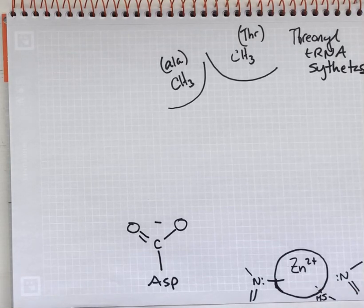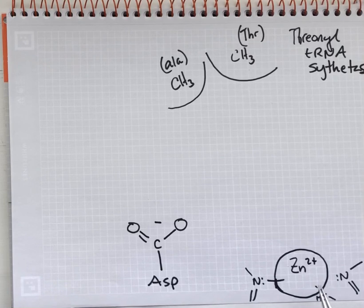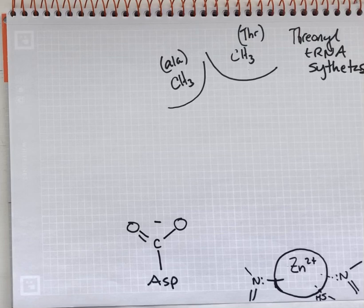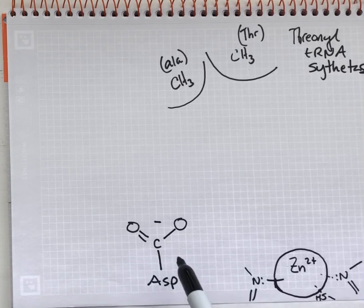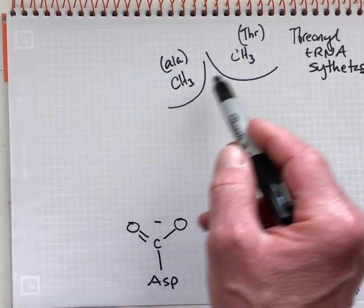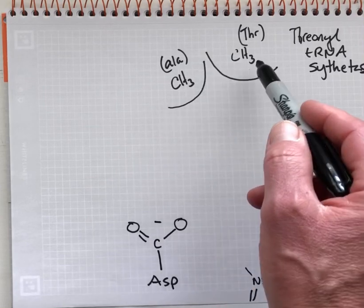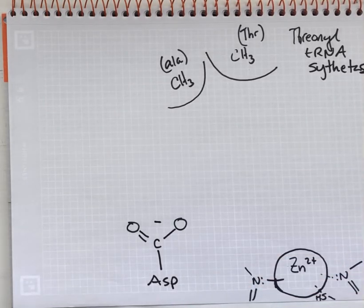There's a zinc ion here. This will look familiar or comparable to the zinc ion that we saw in the active site of carbonic anhydrase. But here, instead of using the zinc for catalysis, we're using it for molecular recognition. The enzyme also provides a hydrogen bond acceptor — an aspartate group — and then some van der Waals contacting surfaces, hydrophobic surfaces, some methyl groups. These all belong to the enzyme itself.